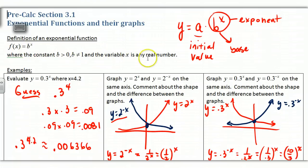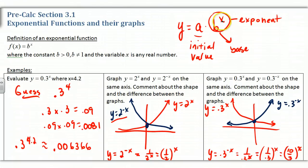b can't be 0 (that's trivial) and b can't be 1 either, because that would just give us y = 1. Here's the general form: if you have a constant out in front, that would be the initial value, because if I plug in 0 for x, b^0 becomes 1, so y equals a when x is 0. That's the initial value; b is the base.